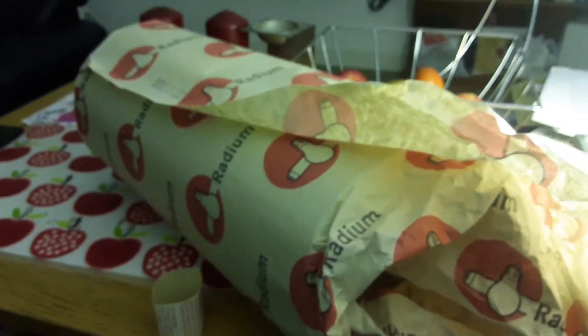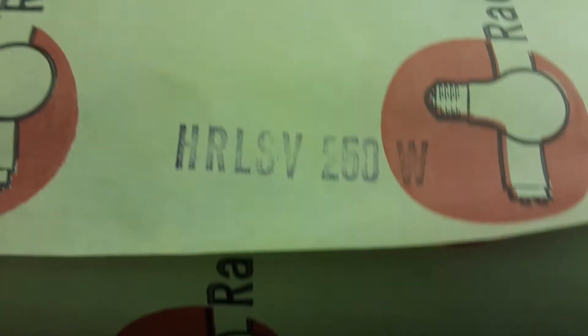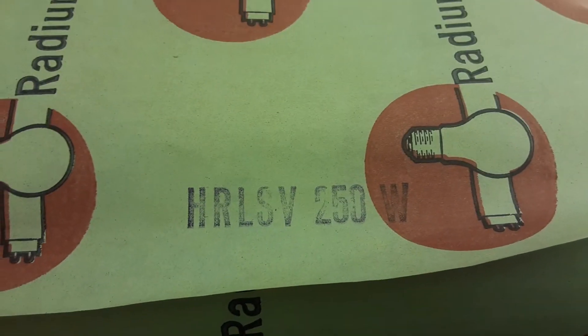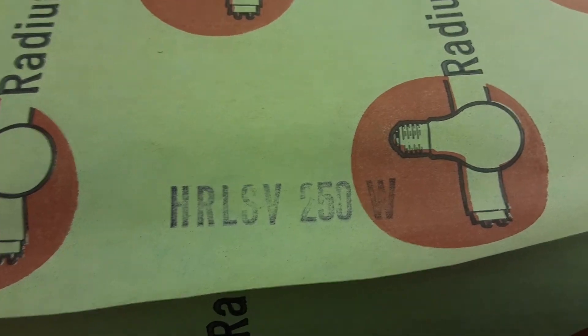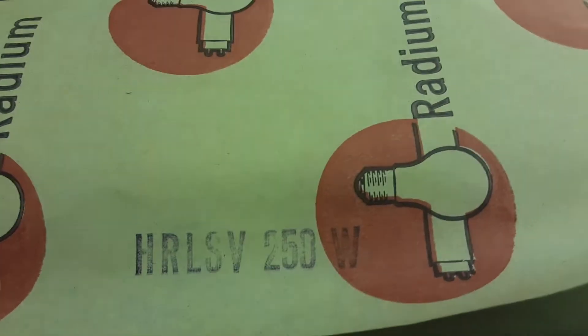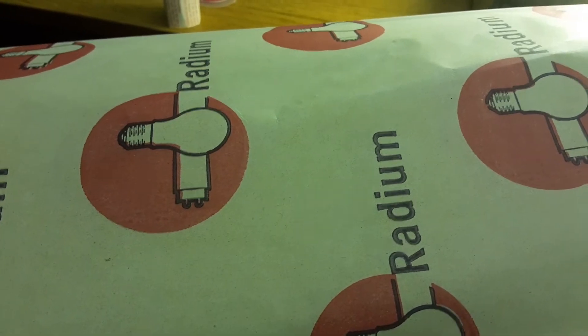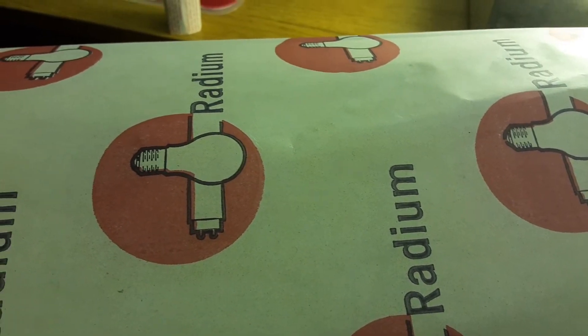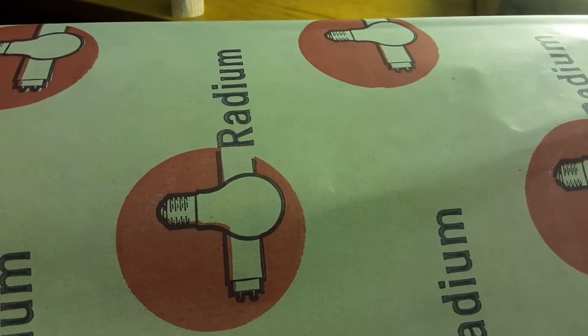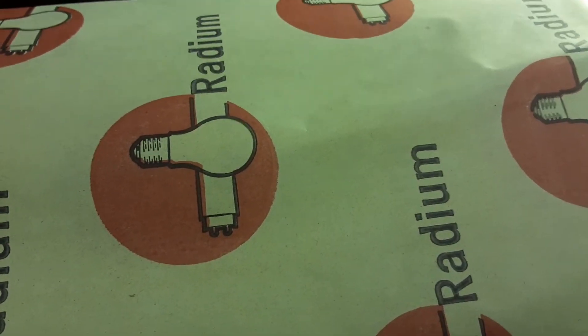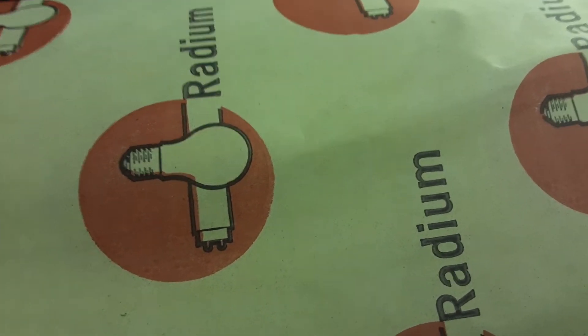On this little tip it says HRLSV 250 watts, Radium. I think it sounds like a hot word, Radium. I wonder if that's a new company for a light bulb. It must be an old one now, but I don't think Radium exists anymore. It's got like a GLS light bulb and the fluorescent tube looks more like a T8 fluorescent tube than a T12 one.